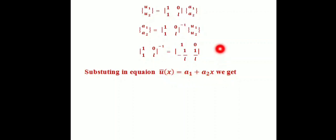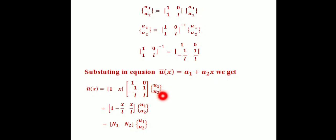After computing the inverse and substituting back, we get: u = [1, x] · [1, 0; -1/L, 1/L] · [u1, u2]ᵀ. Multiplying these terms together gives us the final equation in terms of shape functions.